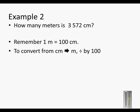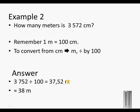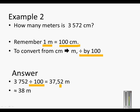How many meters is 3,572 centimeters? One meter is equal to 100 centimeters. To convert from centimeters to meters, we divide by 100. So 3,752 centimeters divided by 100 gives us 37.52 meters. Because the first decimal is a five, the seven has to increase with one and the decimals will disappear. So 37.52 meters is rounded to 38 meters.